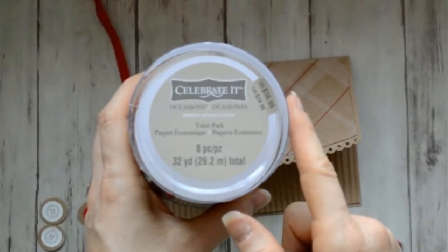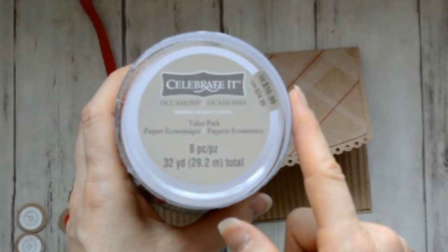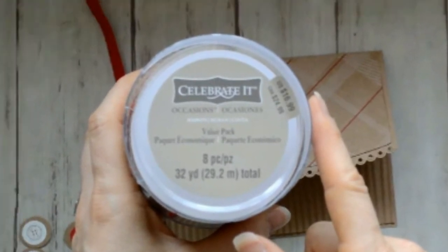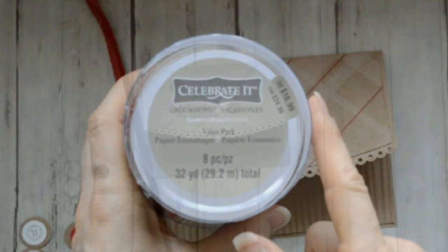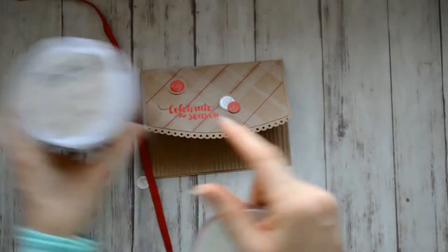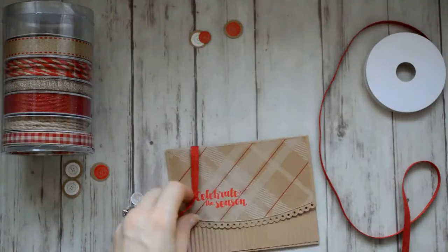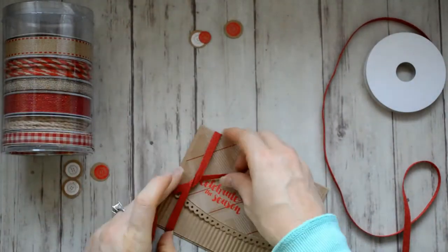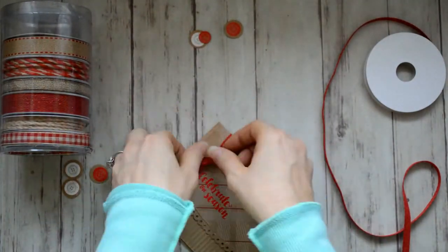This ribbon right here, I'll show it. It was a set of eight. It's craft and red. I got it at Michaels and there were different colors available. And I'm using just the solid red. Kind of help keep the card closed.